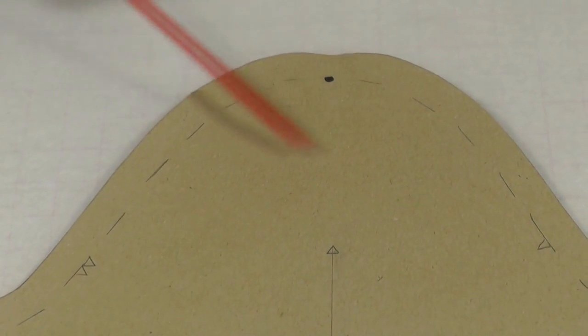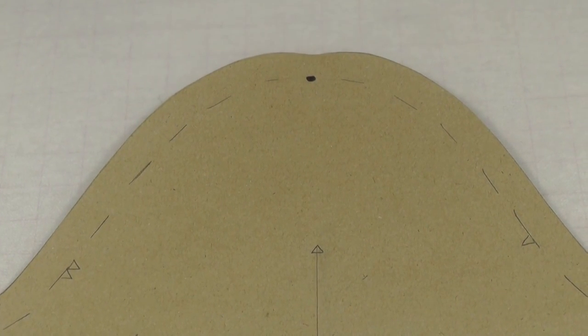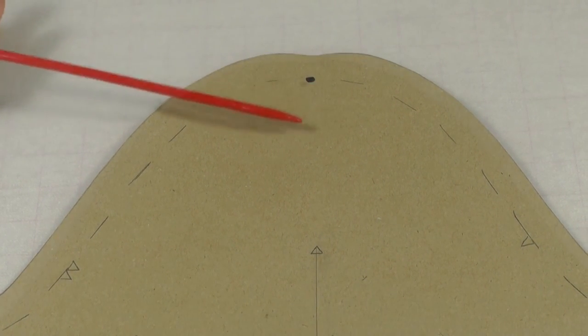This area is where you will find when you're setting in your sleeve to your armhole it can be a bit too much fullness, so this area is where we're going to be altering.